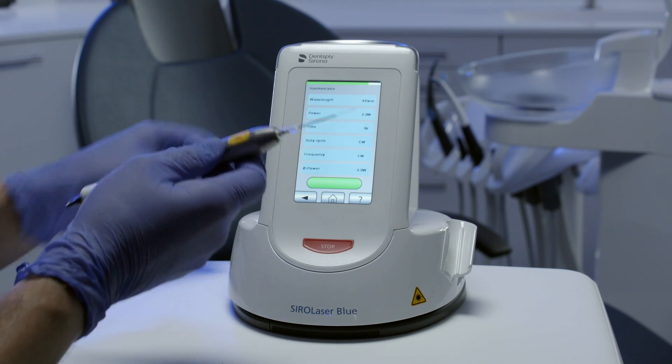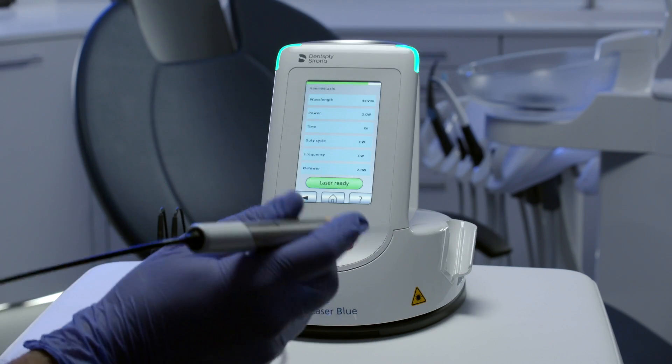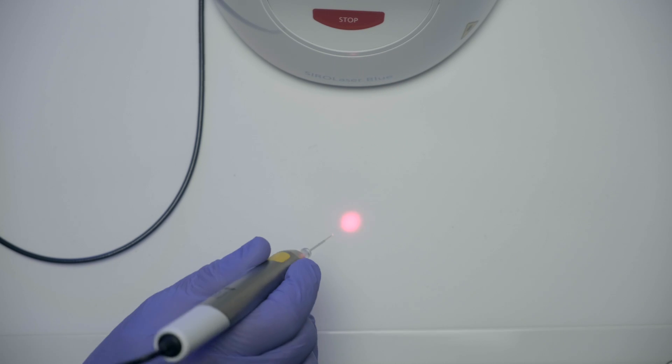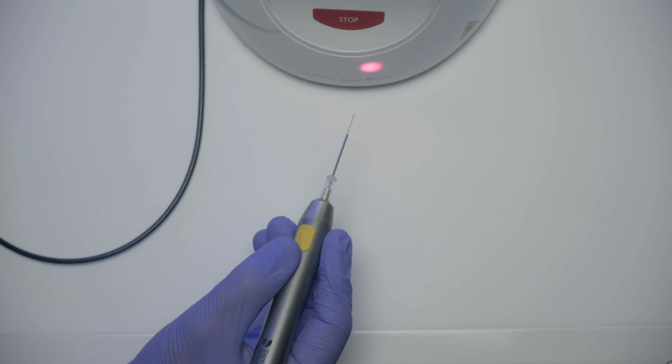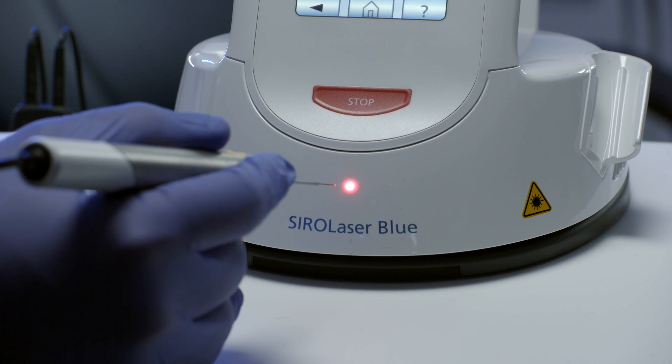Put the laser into operation by choosing any preset treatment. As soon as the SiroLaser Blue is ready, you can check the light pattern. To do this, aim the easy tip vertically at a white background.